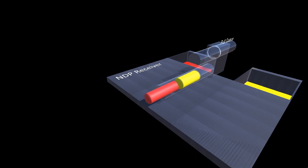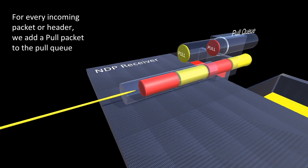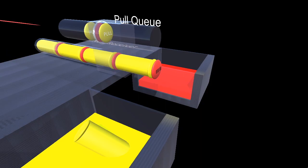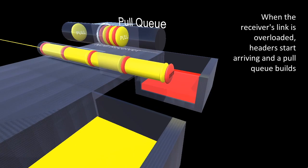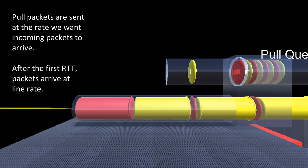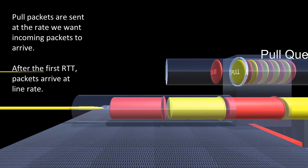Here's the NDP receiver, and an incast has just started. For every incoming data packet or header, we add a pull packet to the pull queue. When the incoming link's overloaded, lots of headers arrive, and the pull queue starts to build. Here we can see pull packets are starting to build up in the queue. OK, let's pause. The key thing is that we only send pulls based on the rate we want data packets to actually arrive. This gives the receiver the ability to control its incoming traffic.